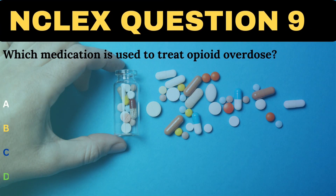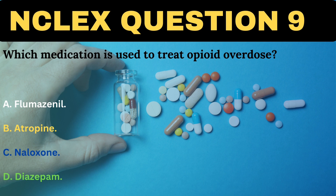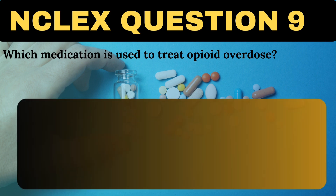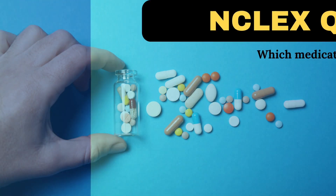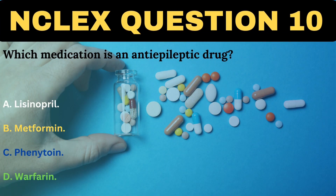Which medication is used to treat opioid overdose? A. Flumazenil. B. Atropine. C. Naloxone. D. Diazepam. The correct answer is C, Naloxone. Naloxone is an opioid antagonist that rapidly reverses the effects of opioid overdose by competing for the same receptor sites, blocking opioid action.